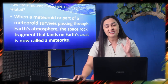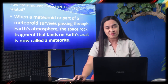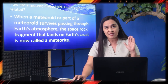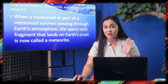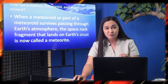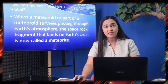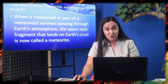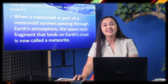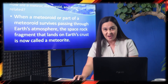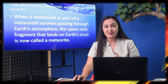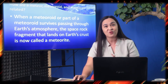So it's the same thing, only it has different names according to its location. If it is still outside our atmosphere in outer space, it is called a meteoroid. Once it enters our atmosphere and starts to burn up, it is now called a meteor. And if it survives and lands on the ground, it is now called a meteorite. Same object, different names.